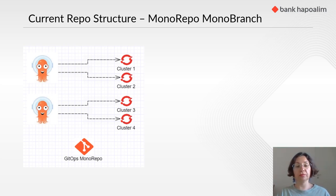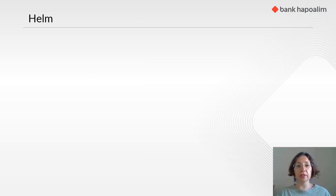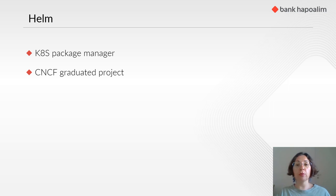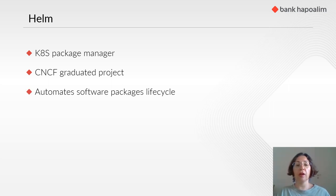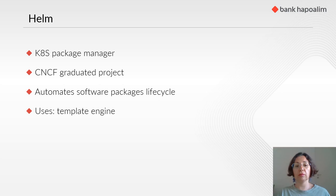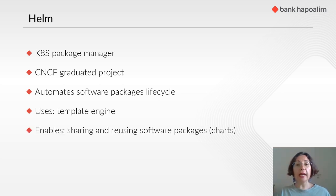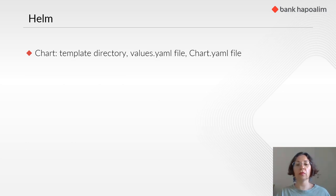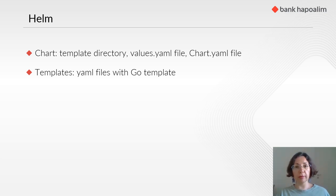One option was to manage configuration with Helm. Helm is a Kubernetes package manager and a CNCF graduated project, meaning it is considered stable, widely adopted, and production ready. Helm automates software package lifecycle such as installing, upgrading, and removing packages. It uses a template engine and enables sharing and reusing software packages called Helm charts. The chart consists of a template directory, a values YAML file, and a chart YAML file. The templates are YAML files with Go template and template functions.